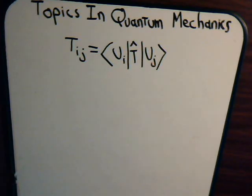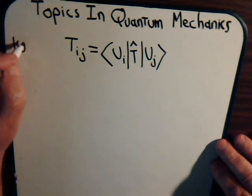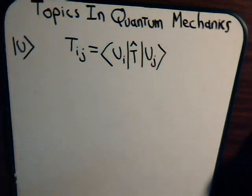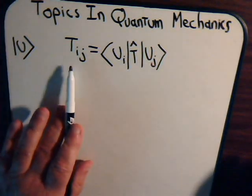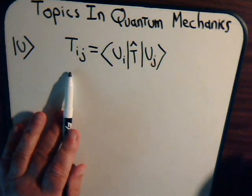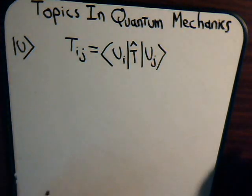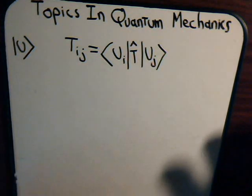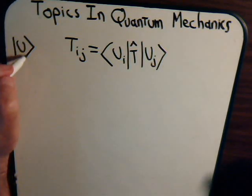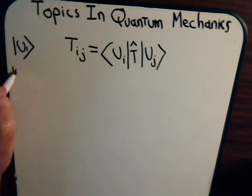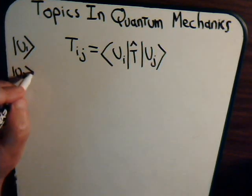Let's say that we have an orthonormal basis set of vectors, which we'll designate as U. The definition to get a linear operator T in matrix form is given by this formula. To understand it, suppose we have just two orthonormal basis vectors: U1 and U2.